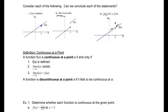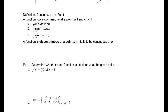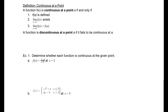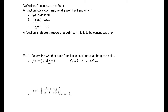Let's look at a few examples. Determine whether each function is continuous at the given point. We must consider three things: first, is it defined at x equals 2? Do the limits from the left and the right agree? And do all three conditions agree? Let's check f of 2. If I evaluate that function at 2, I get 0 over 0. So this is undefined, which means condition 1 is violated — it is discontinuous at x equals 2.